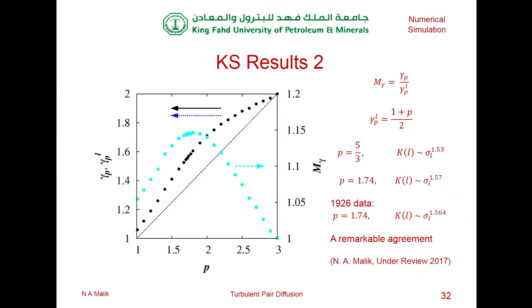This summarizes the result. The blue dashed line is what we would expect from pure locality scaling, and the black dots are the actual simulation results. The ratio between the two is shown as the cyan line. The maximum deviation is roughly where you'd expect Kolmogorov scaling. For the Kolmogorov case with five-thirds, we get a scaling of 1.53 — already larger than Richardson's four-thirds. With intermittency at P=1.74, we get 1.57, which is almost exactly the same as the revised 1926 data.